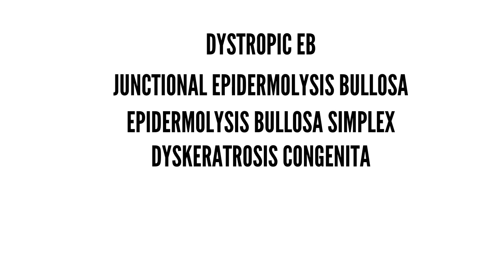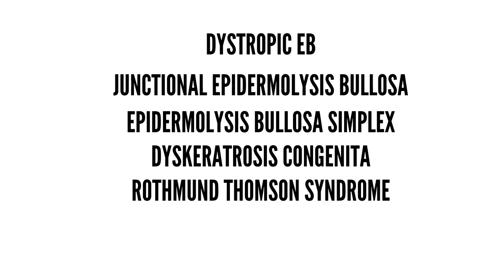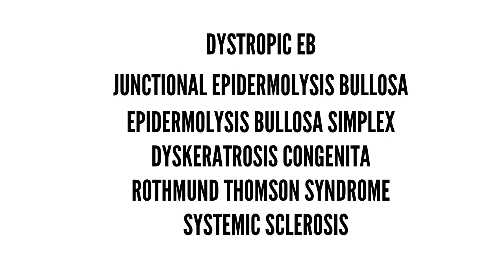Dyskeratosis congenita is an inherited bone marrow failure syndrome associated with poikiloderma, palmar-plantar hyperkeratosis, mucosal inflammation, and predisposition to cancer; detailed history and laboratory workup allow discrimination. Rothmund-Thomson syndrome is characterized by poikiloderma, sparse hair, eyelashes, and eyebrows, small stature, skeletal and dental abnormalities, cataracts, and increased risk of cancer especially osteosarcoma. Mild phenotypes in adults with Kindler syndrome may also be misdiagnosed as systemic sclerosis based on sclerotic fingers, microstomia, and esophageal stenosis.